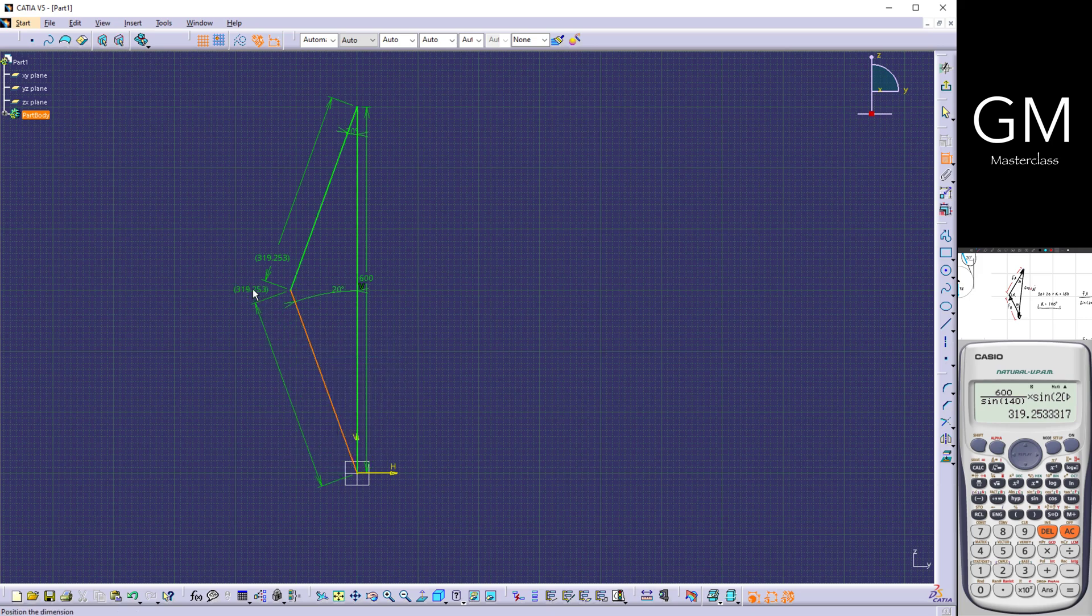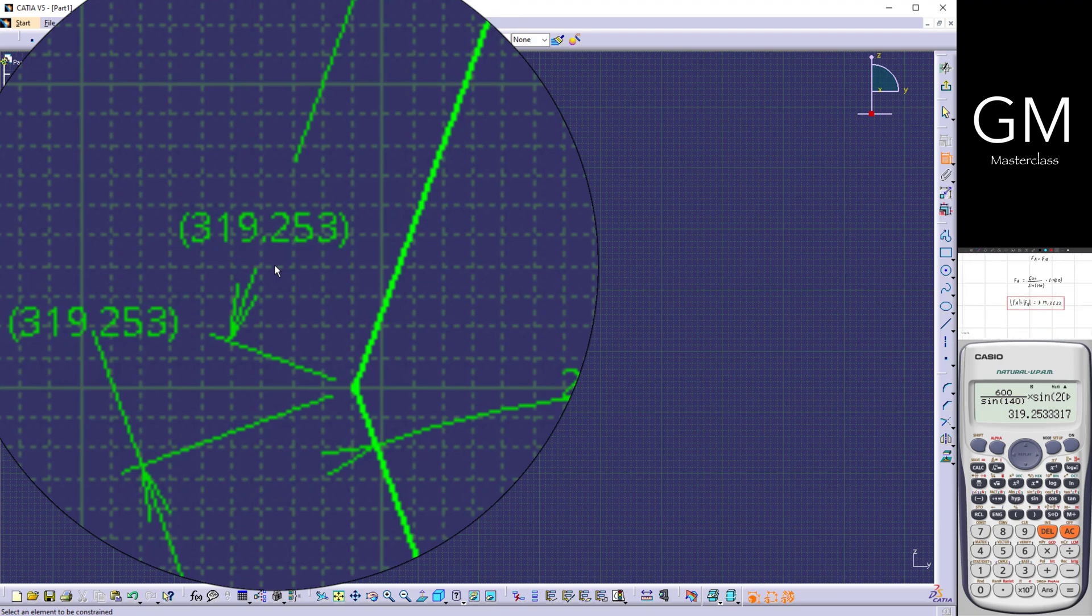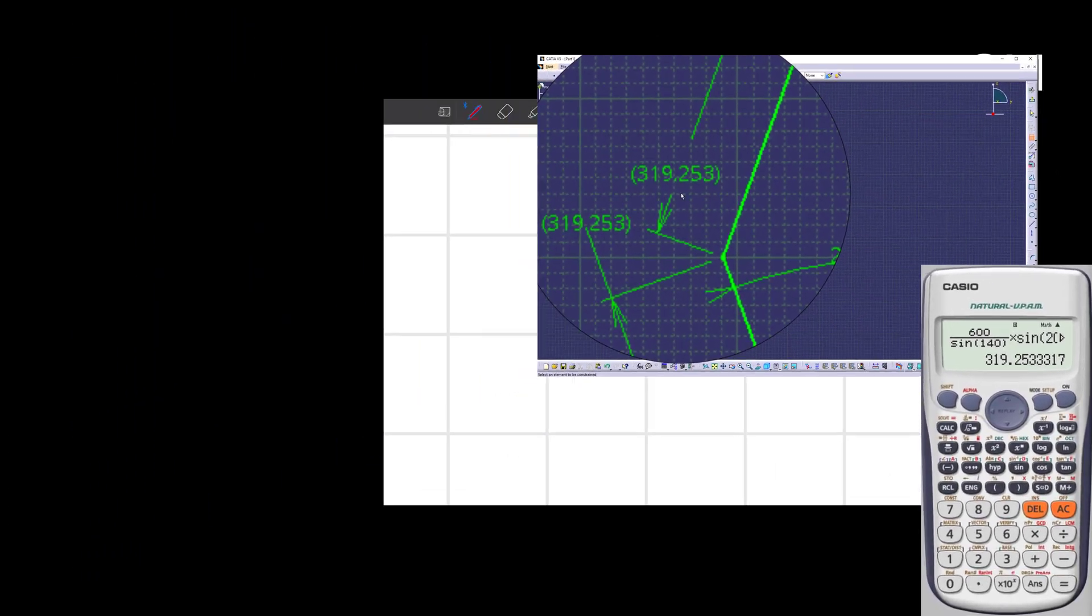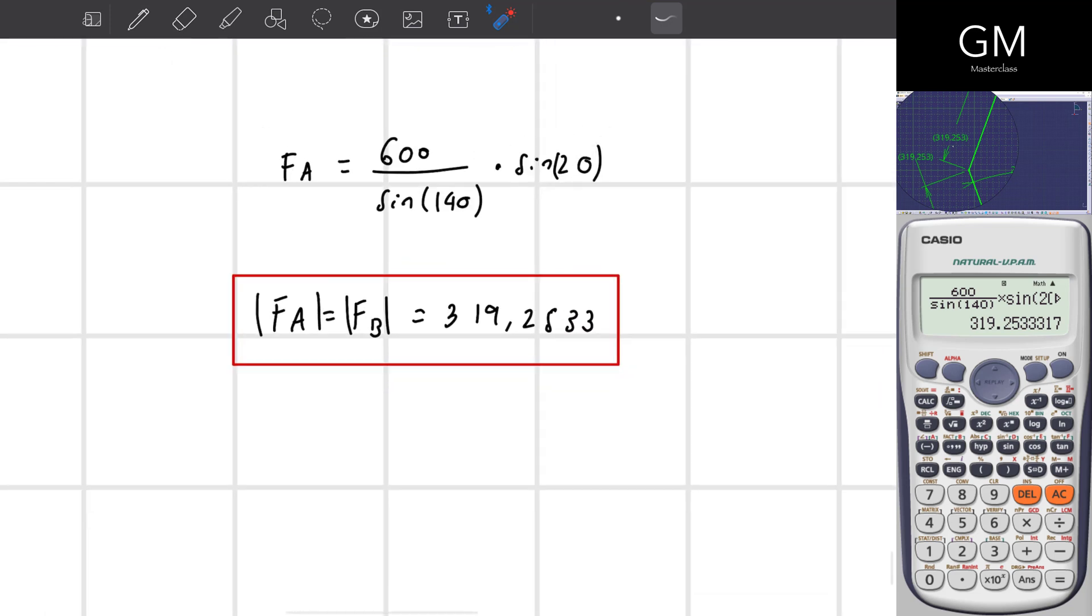Reference. As you can see, the answer is 319.253. It is not showing me all the numbers that comes after this three because the software is approximating using just three significant digits after the comma.